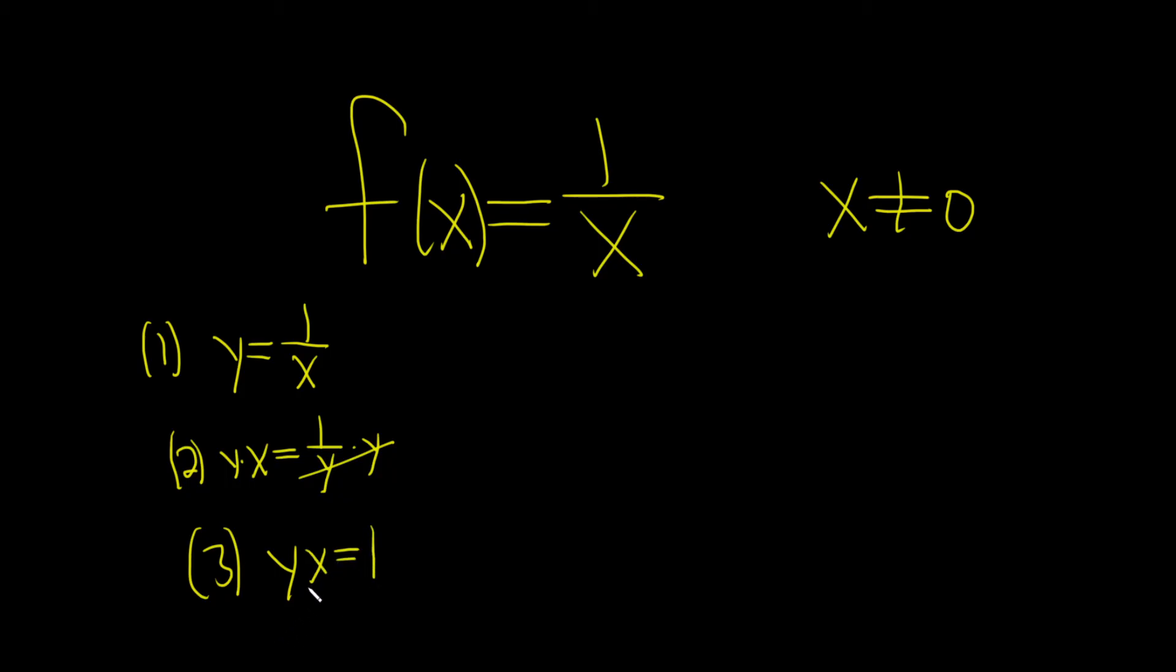And we're looking for y. It's being multiplied by x, so we'll just divide by x. So we get y equals 1 over x.